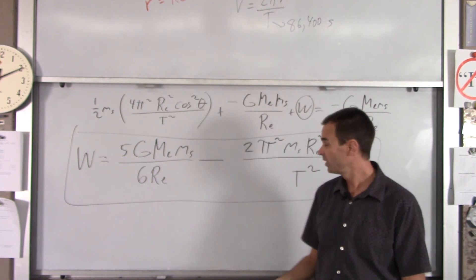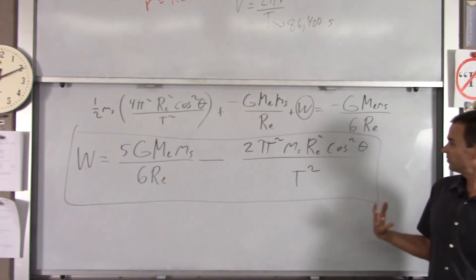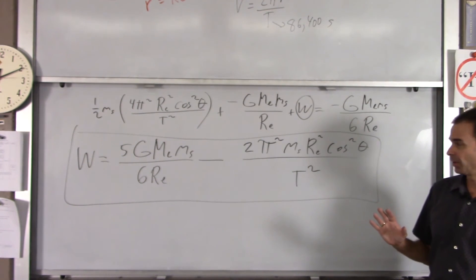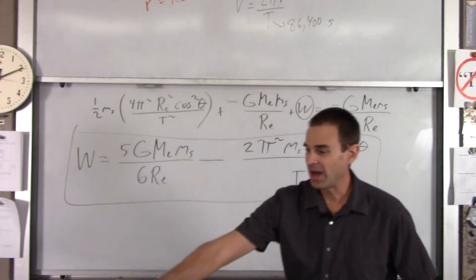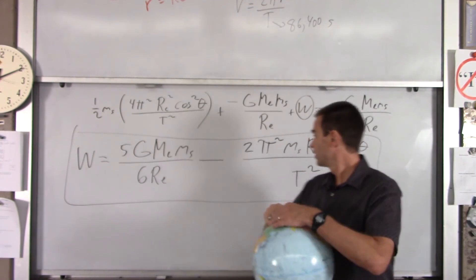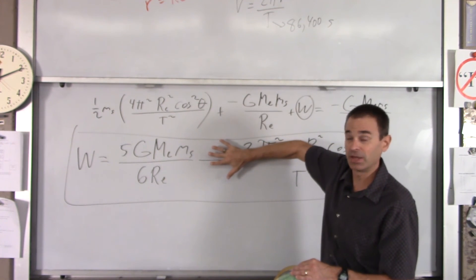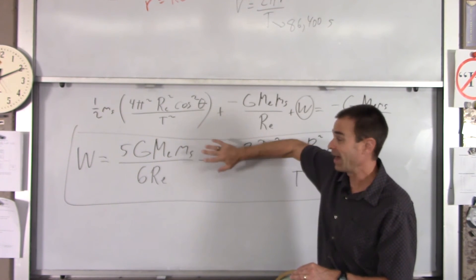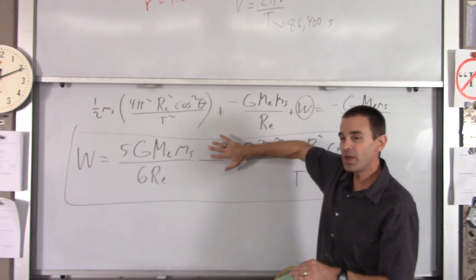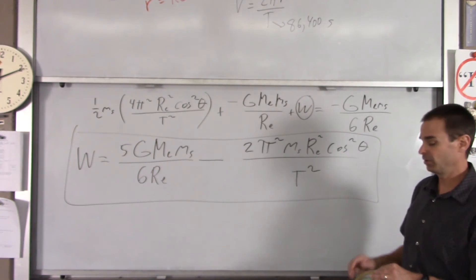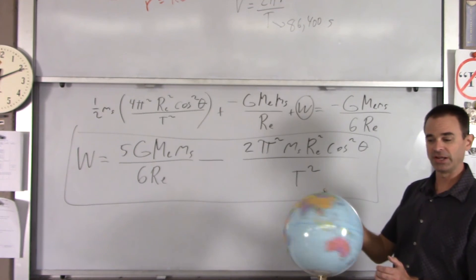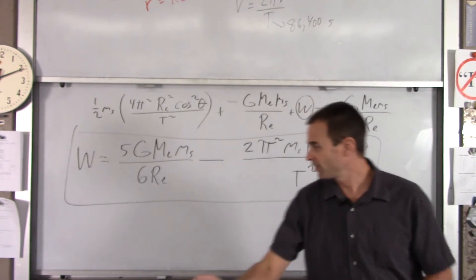Now, having said that, I want to make one note here. If the Earth was not rotating, this term would be zero. And that would be your work right there. So if the Earth was not rotating, that would be your answer. We are lucky. We get to do less work because the Earth is rotating.